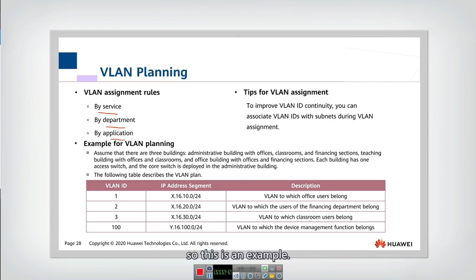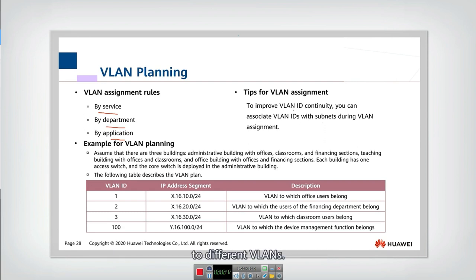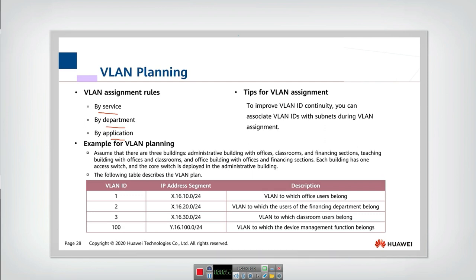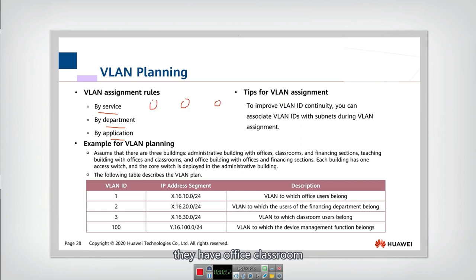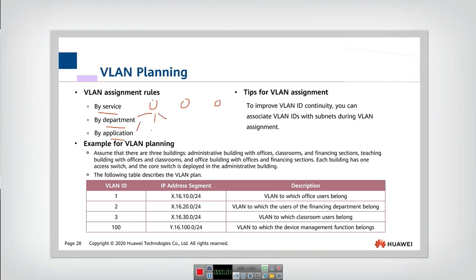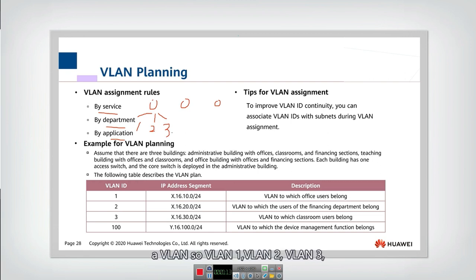Here is an example. We also need to assign continuous VLAN subnets to different VLANs. Let's look at this network — assume we have three buildings. In the first building, they have an office, a classroom, and a financial section — three sections in total. We can assign each section a VLAN: VLAN 1, VLAN 2, and VLAN 3.